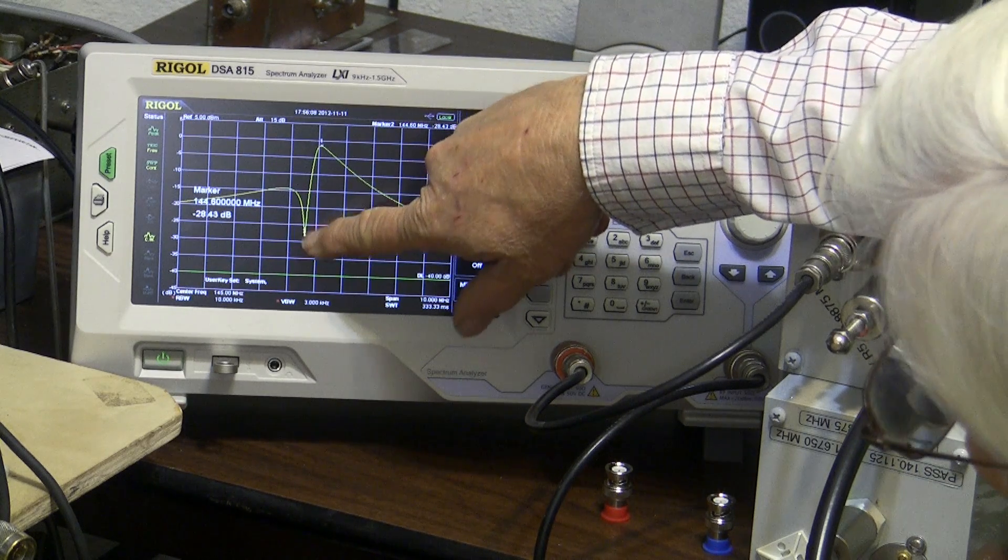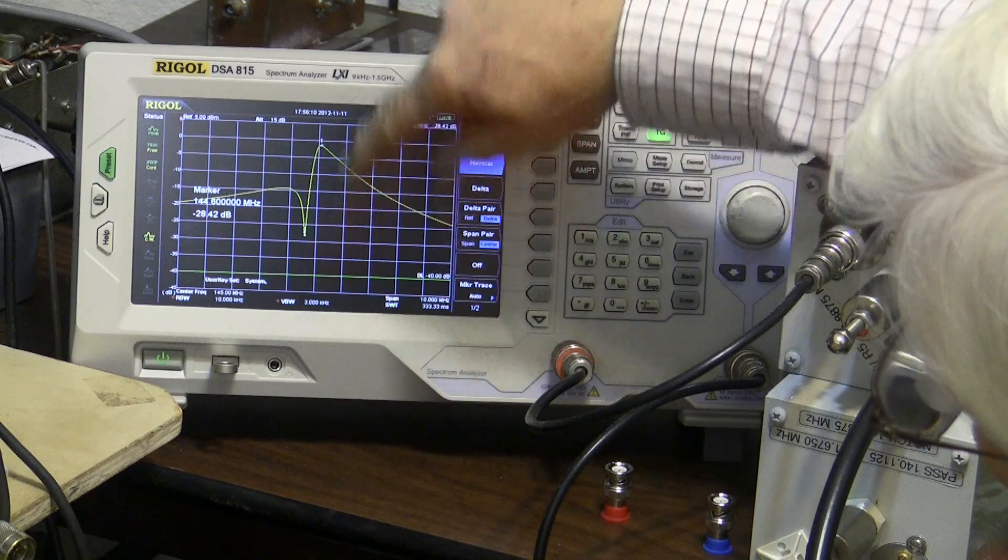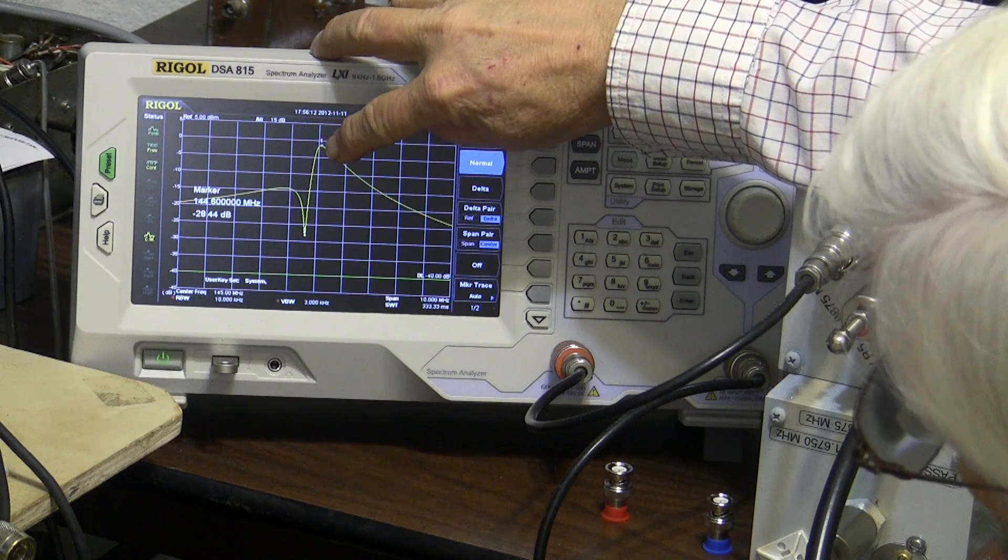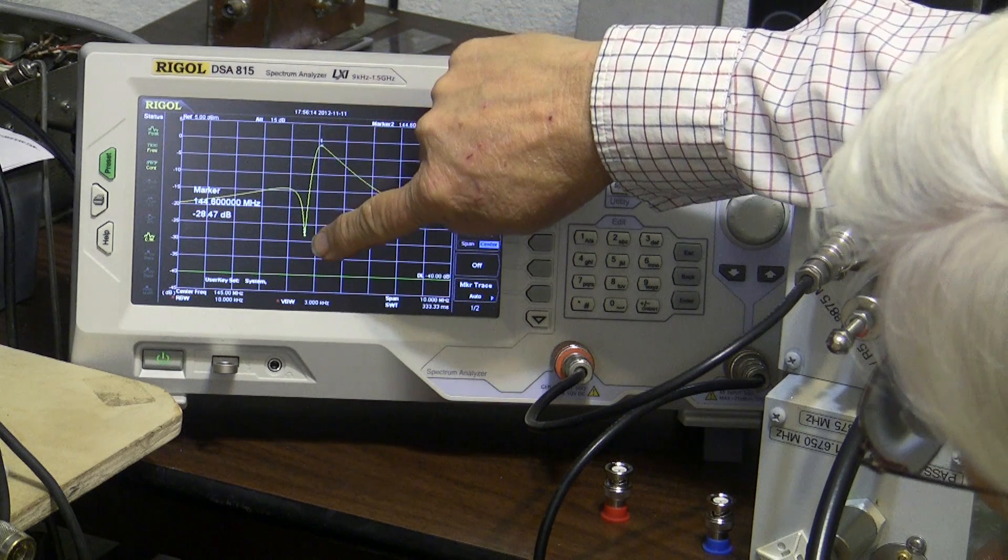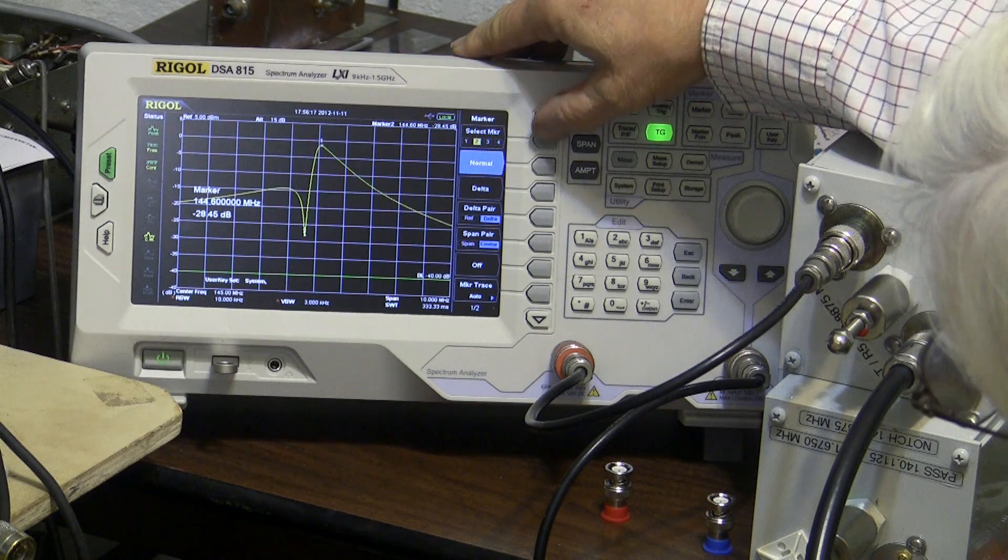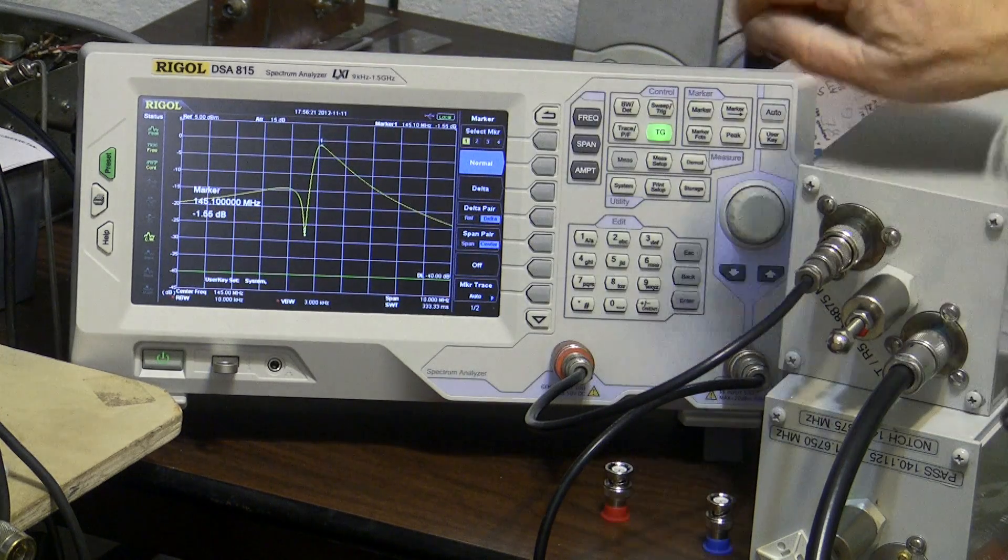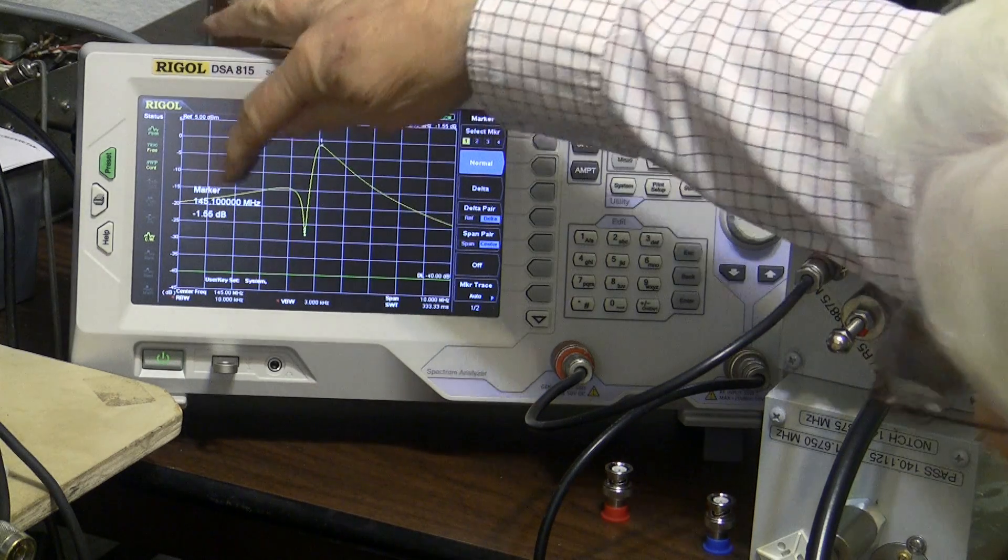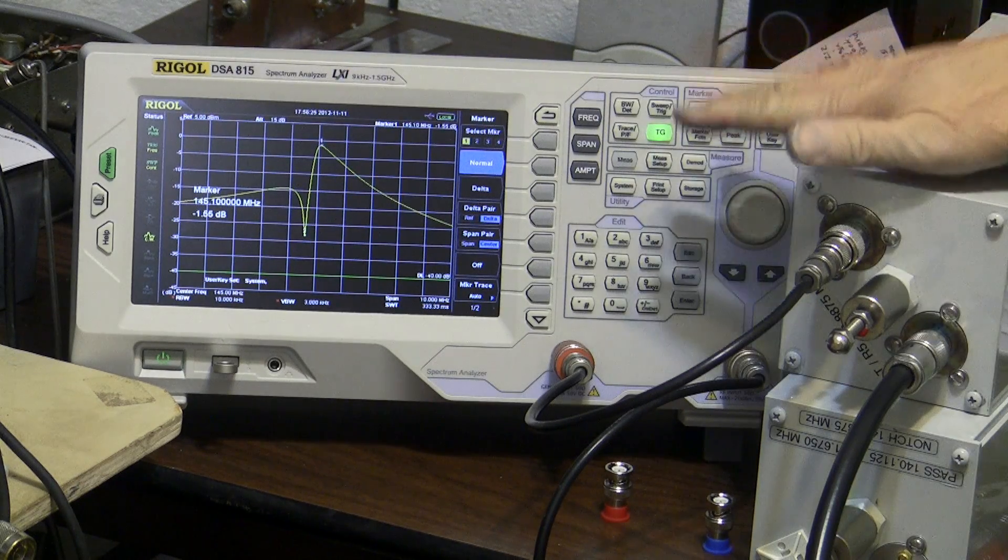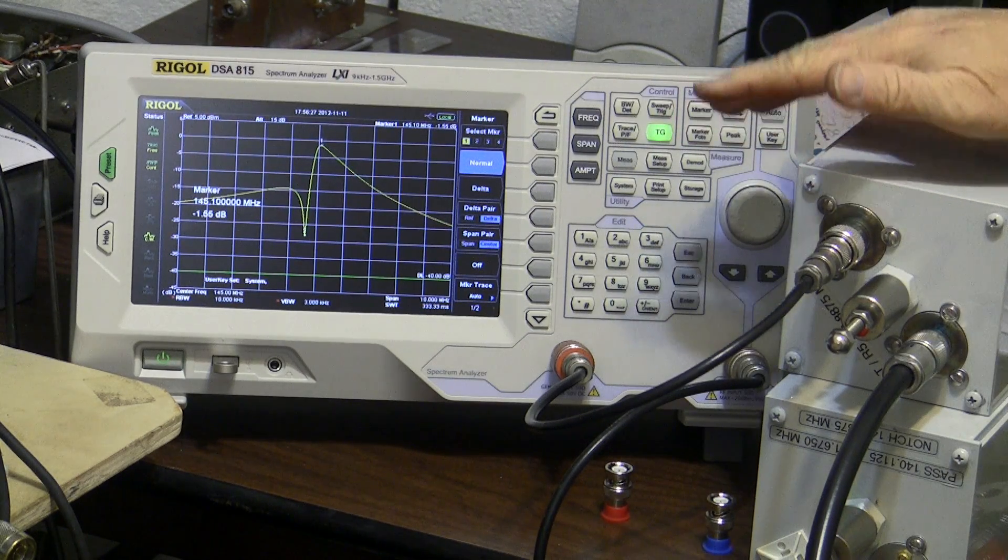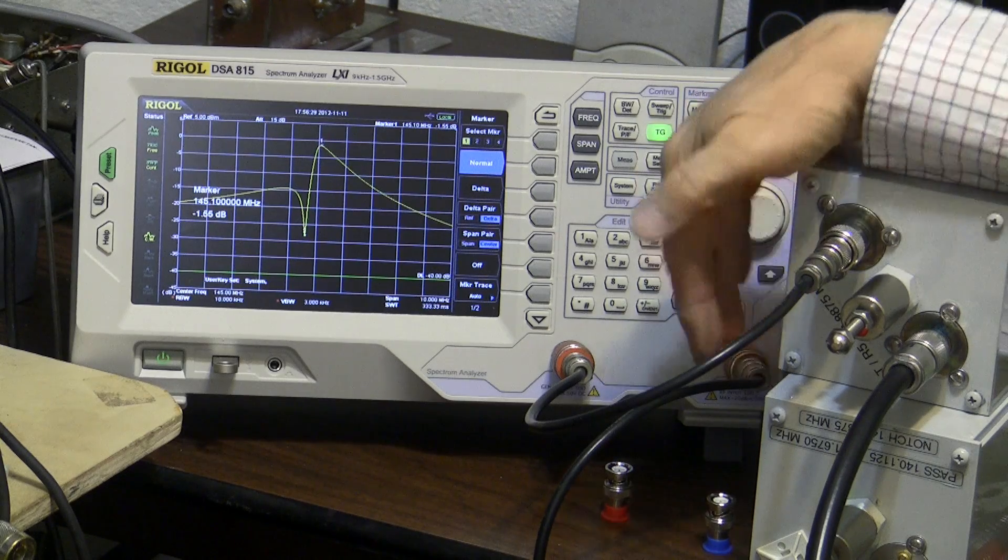This would be the output frequency of the transmitter being attenuated at the receive input frequency. For example, if the receiver was at this frequency, this would be the output of the transmitter. So it's 28 dB down at 144,600, and it is minus 1.5 dB down at 145,100, a fairly typical situation with a bandpass filter and a pass notch filter together.